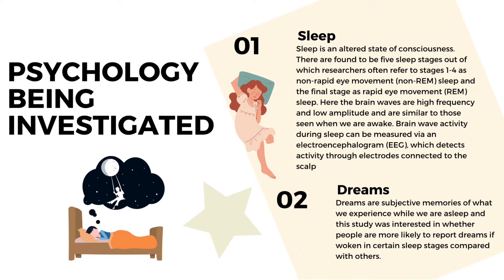The psychology being investigated in Dement and Claytman's study covered two things: sleep and dreams. Sleep is an altered state of consciousness with five stages. Stages one to four are non-rapid eye movement sleep stages, and the fifth stage is the rapid eye movement stage. In the REM stage there is high frequency brain waves and low amplitude, similar to when we are awake, and brain activity is highest during REM.